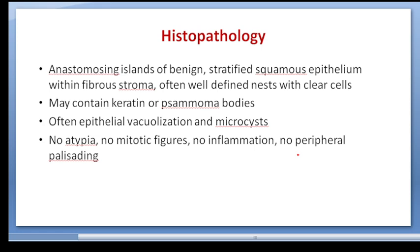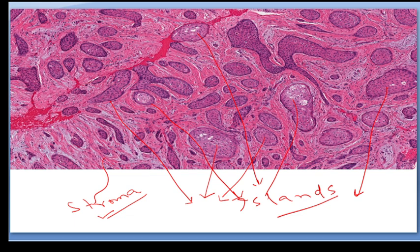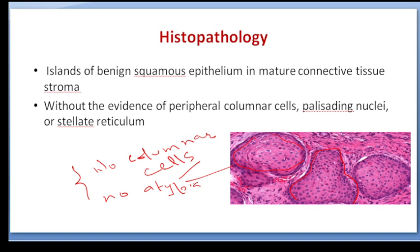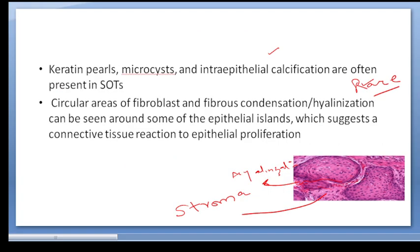Generally, there is no atypia, no mitotic figures, no inflammation, and no peripheral palisade. In the histological picture, we see islands composed of squamous cells within mature connective tissue stroma. There are no tall columnar cells and there is little reverse polarization. Keratin pearls, microcysts, and intra-epithelial calcifications are often observed. Sometimes fibrous condensation or hyalinization is seen around some of the epithelial islands.